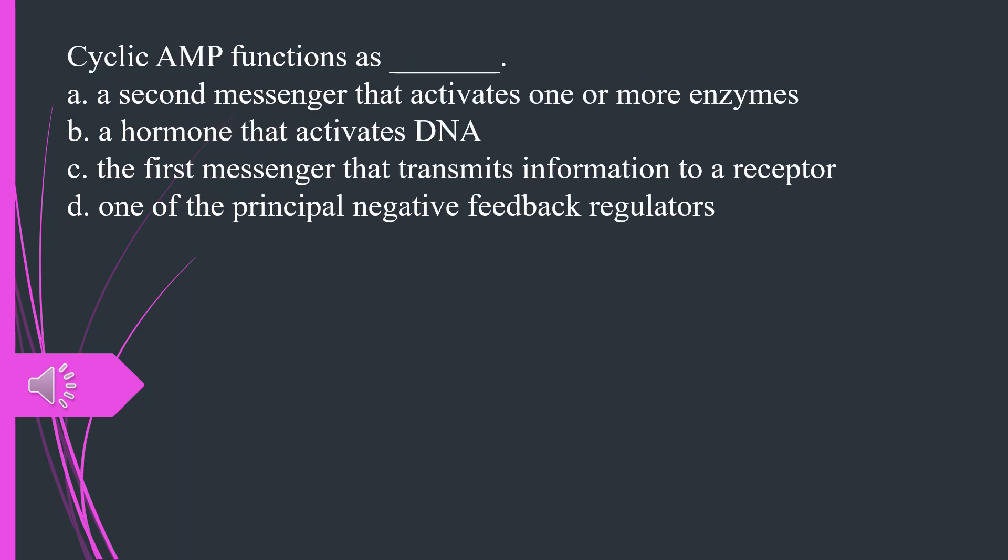Cyclic AMP functions as A. A second messenger that activates one or more enzymes B. A hormone that activates DNA C. The first messenger that transmits information to a receptor D. One of the principal negative feedback regulators. The answer is A, a second messenger that activates one or more enzymes.